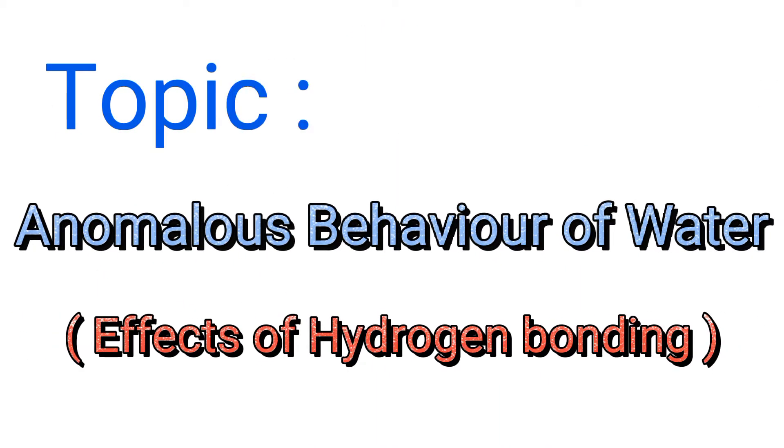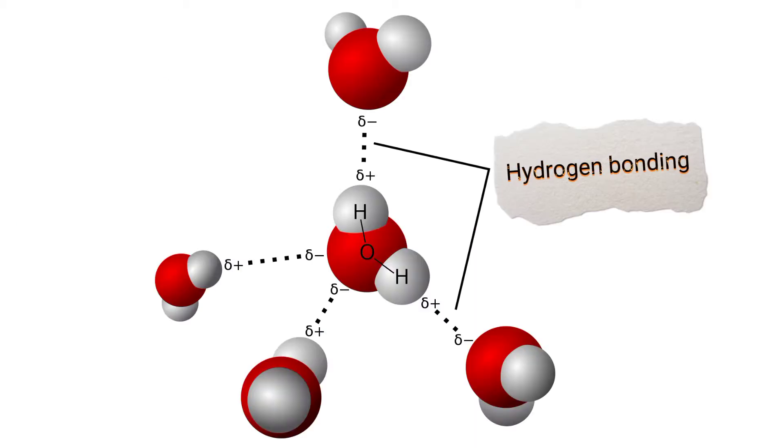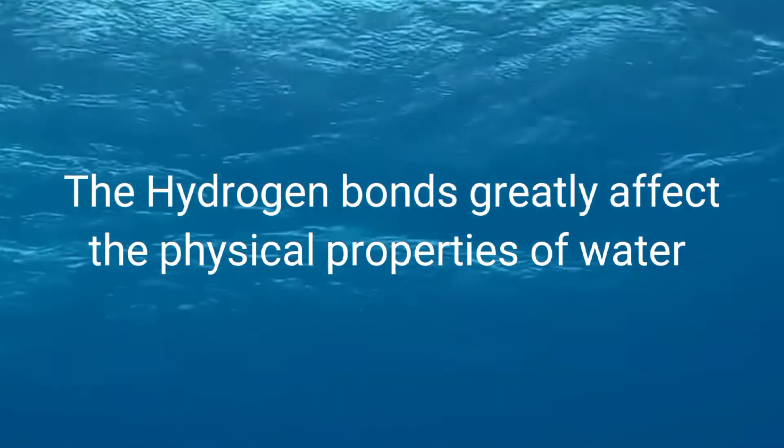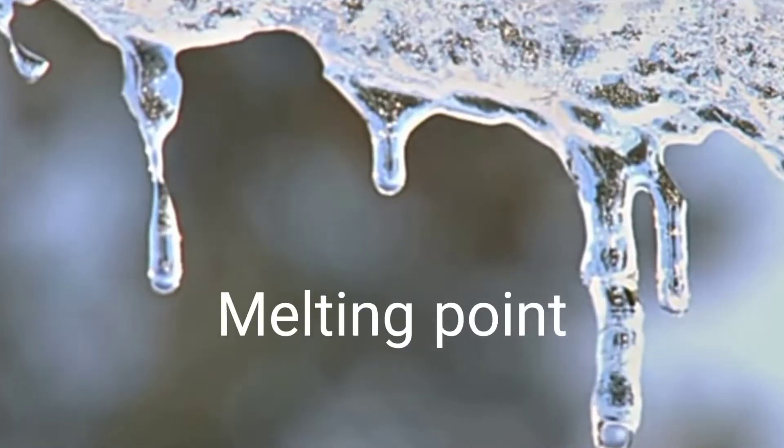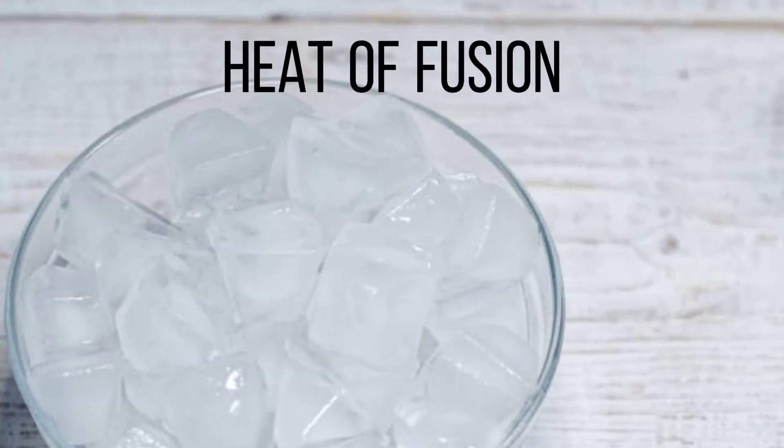Effects of hydrogen bonding: Although hydrogen bonding are the strongest secondary bonds, it is still weaker than normal covalent bonds. The hydrogen bonds greatly affect the physical properties such as melting point, boiling point, and heat of fusion.